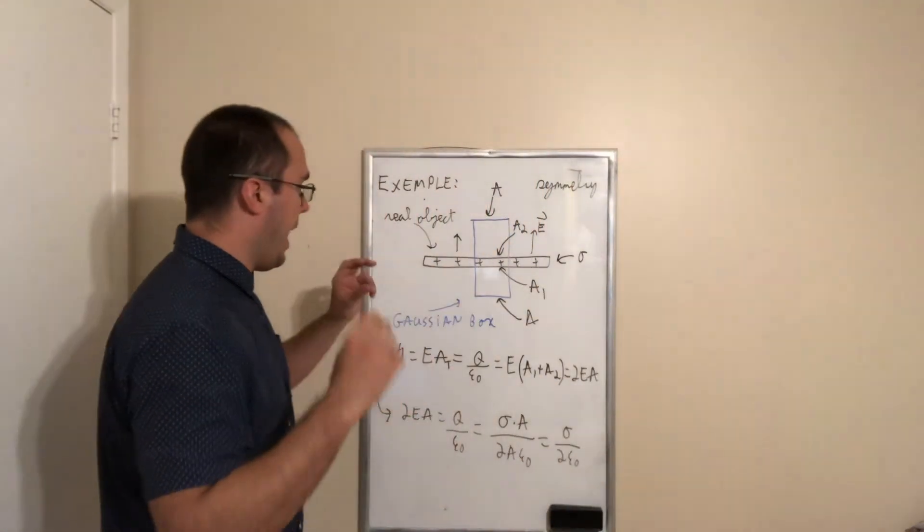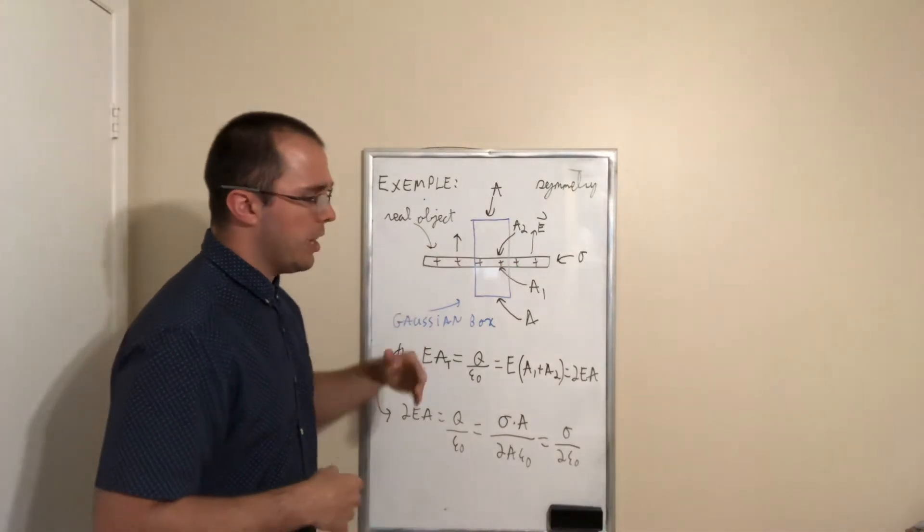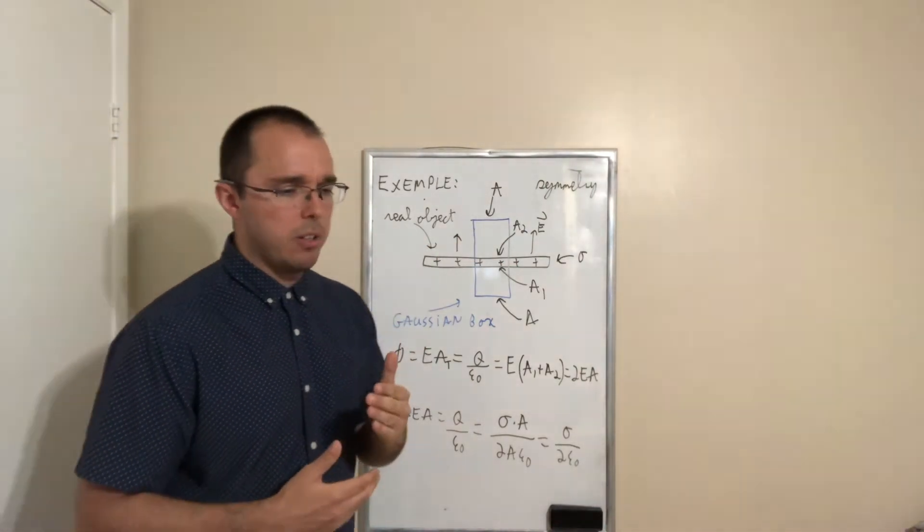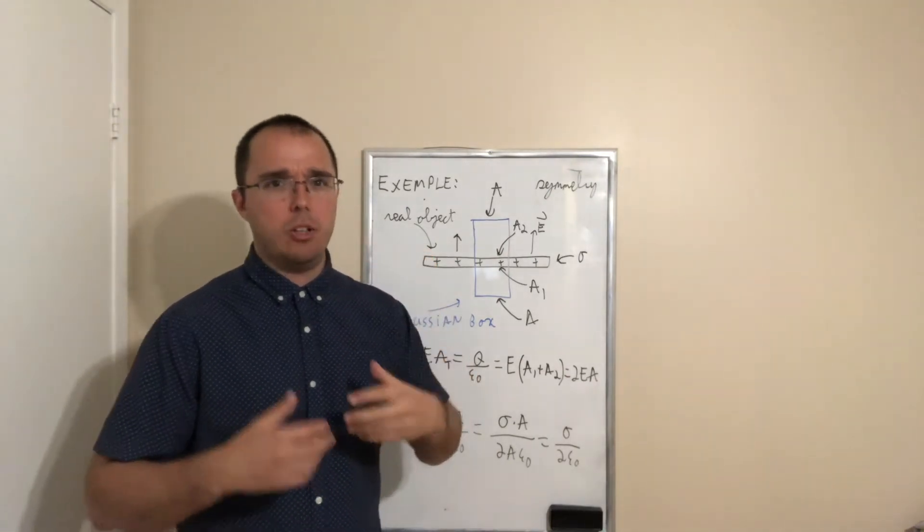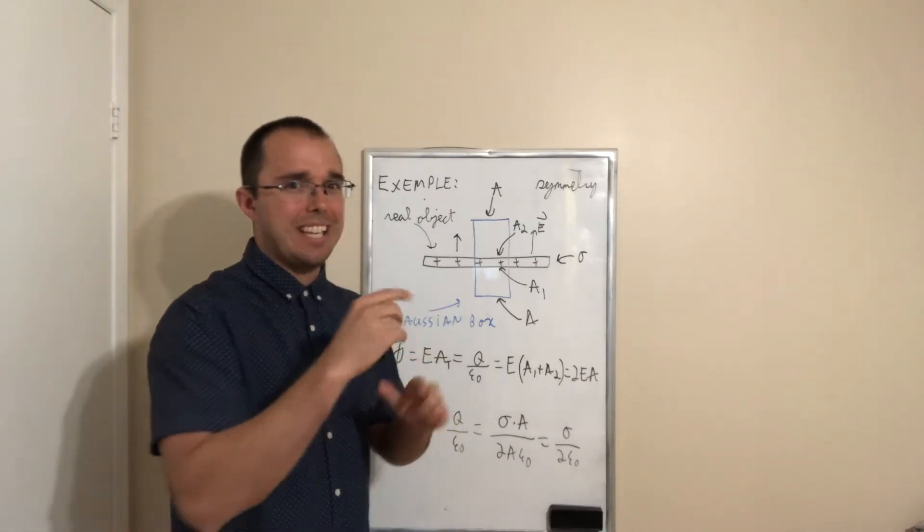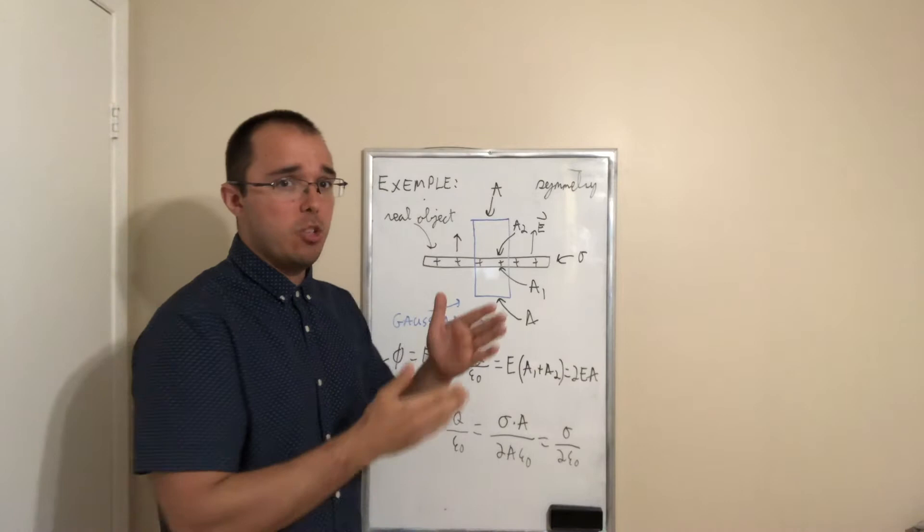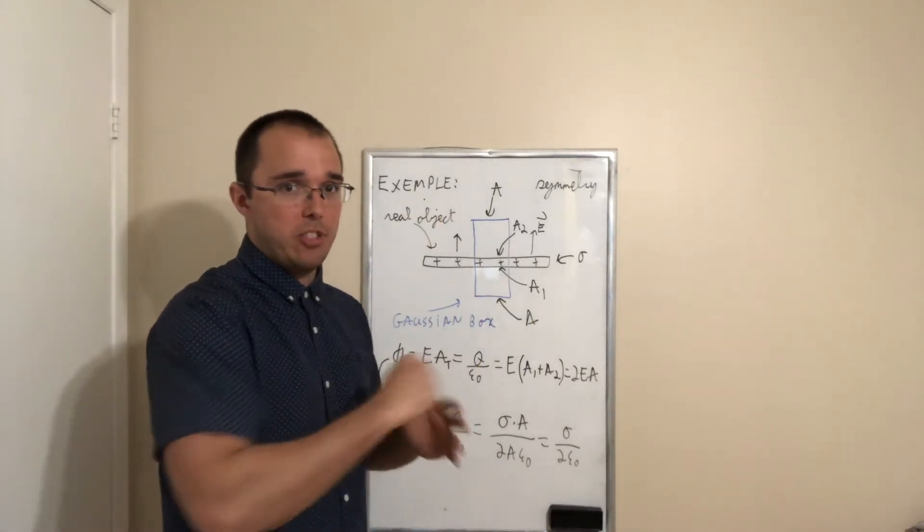So let's have a look at a plane, a charge plane, and here we are going to be talking about a thin plane. All right, so maybe an aluminum foil that is really thin. So in this case, we are not going to consider the electric field inside the plane, but you will see we can use Gauss law to prove one of the formulas we've been using at the end of chapter 2.